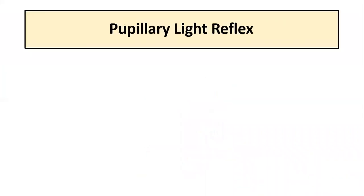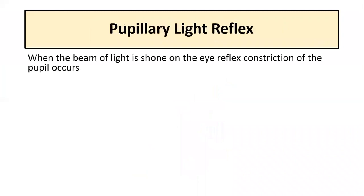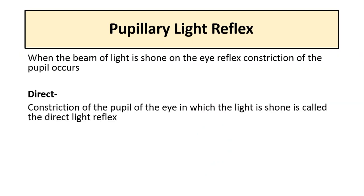The pupillary light reflex is when a beam of light is shone on the eye, there is reflex constriction of the pupil in both eyes. The first component is the direct light reflex, which is the constriction of the pupil in the eye in which the light is shone. That is, if you shine the light in the left eye, there is constriction of the pupil in the left eye — that is called the direct light reflex.